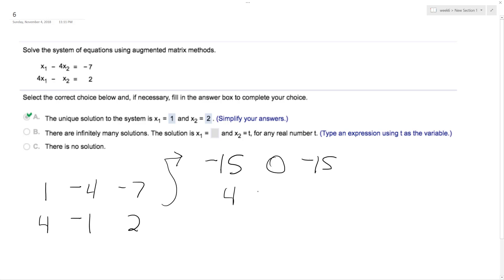Then I'll have 4, negative 1, 2. So on the second row, I can multiply it by, or divide through by negative 15. So I end up with 1, 0, 1, and then 4, negative 1, 2.